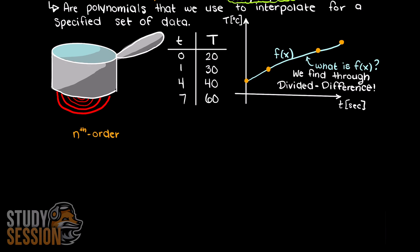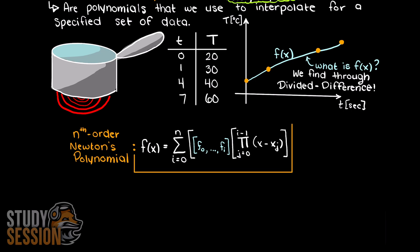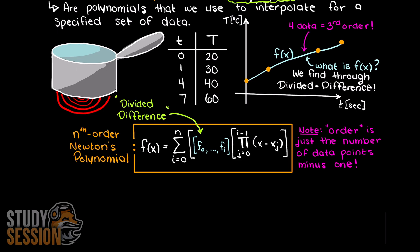Then, we can find the output for any point within the bounds of our applied data set. The general formula for an nth order Newton's polynomial is written here. Where n is our order of the Newton polynomial, which is simply the number of data points that we have, minus 1. And to solve a Newton's polynomial, all we are going to do is find the coefficients that I've highlighted here.